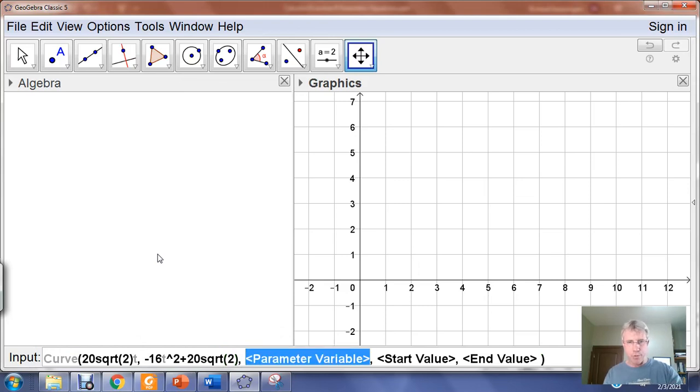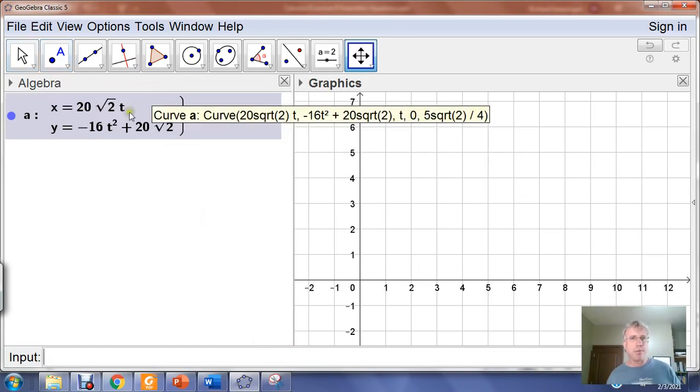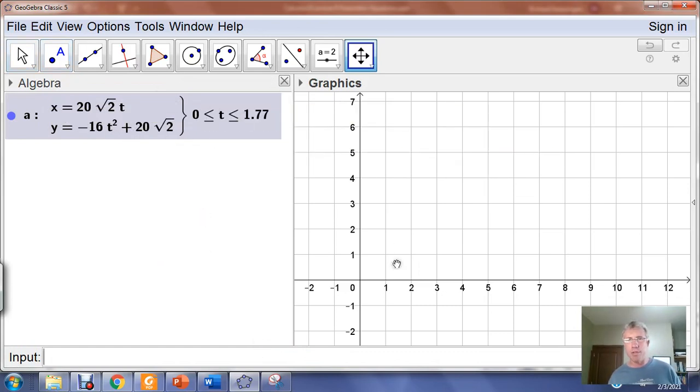It highlights parameter value. I type T, which is the parameter name I'm using. I hit Tab. The start of our interval was at 0 seconds. Tab. The end of our interval was at 5 square root of 2 divided by 4 seconds. Now I'm just going to hit Enter, which will load the equation from the input bar into the algebra window up here. I can see my parameterized equations and my time interval.